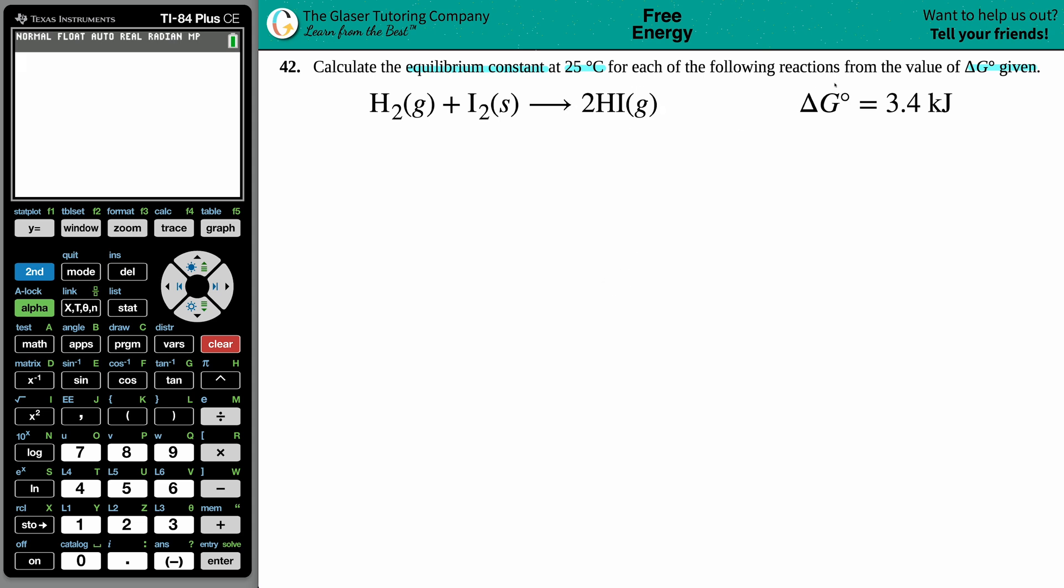They give us the Gibbs free energy, delta G°, as 3.4 kilojoules. In this case we're trying to solve for that equilibrium constant. Keep in mind that the equilibrium constant is always that capital K value.